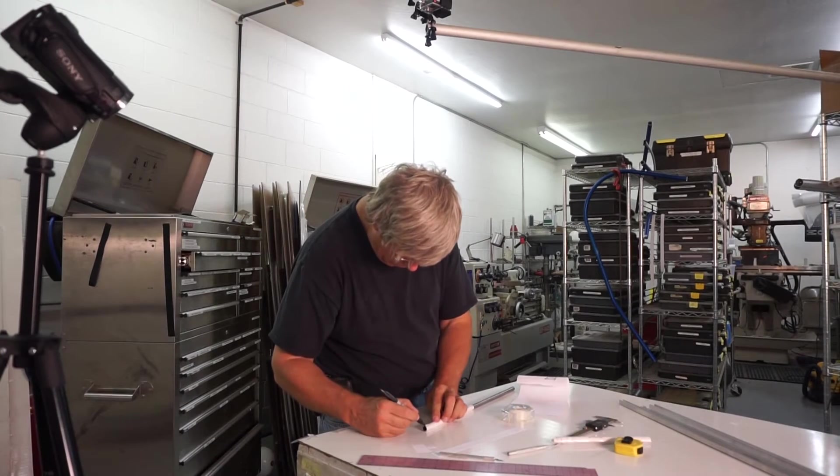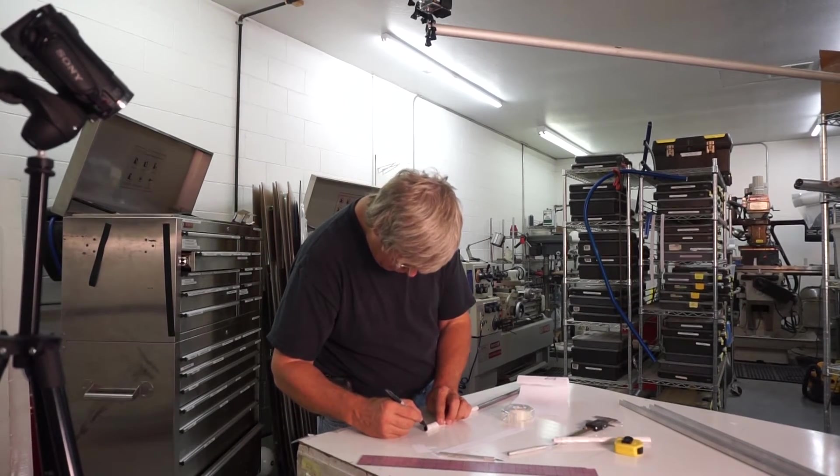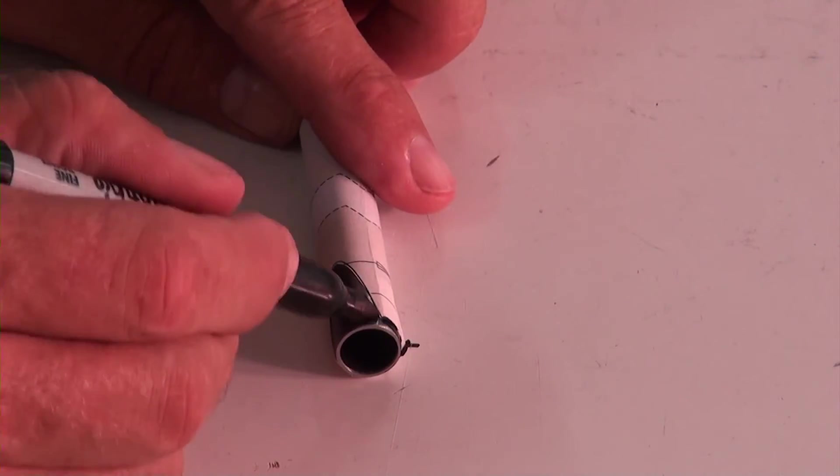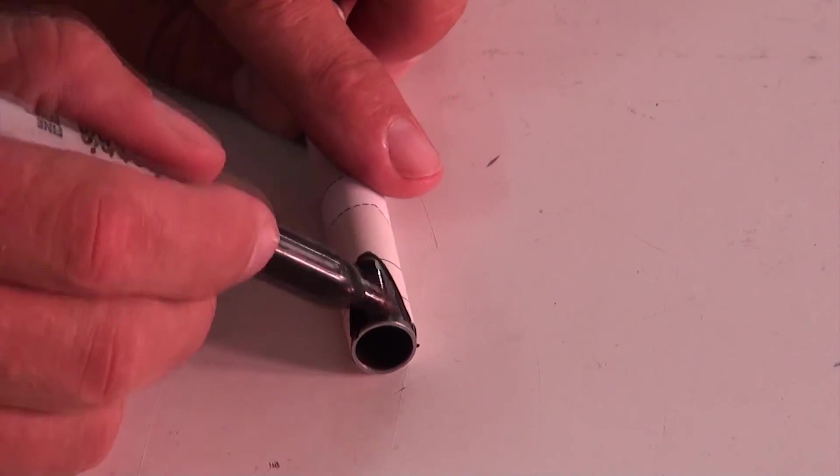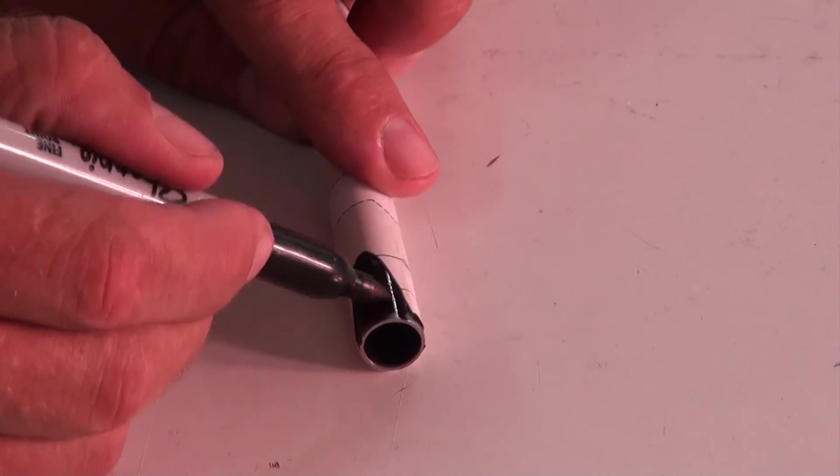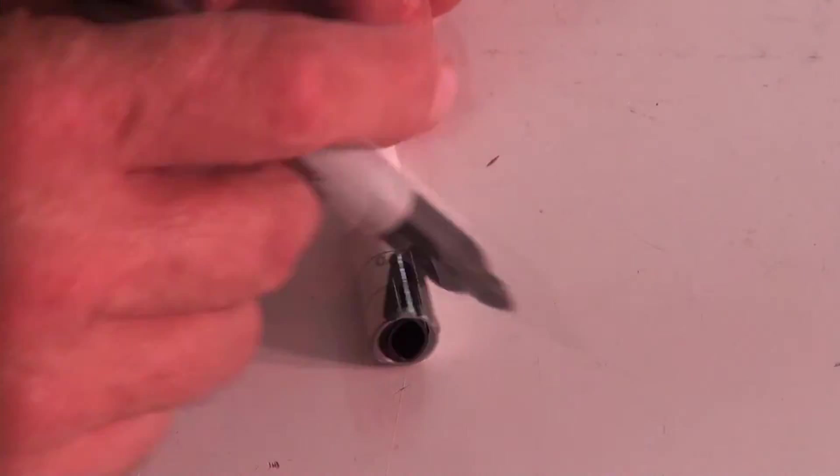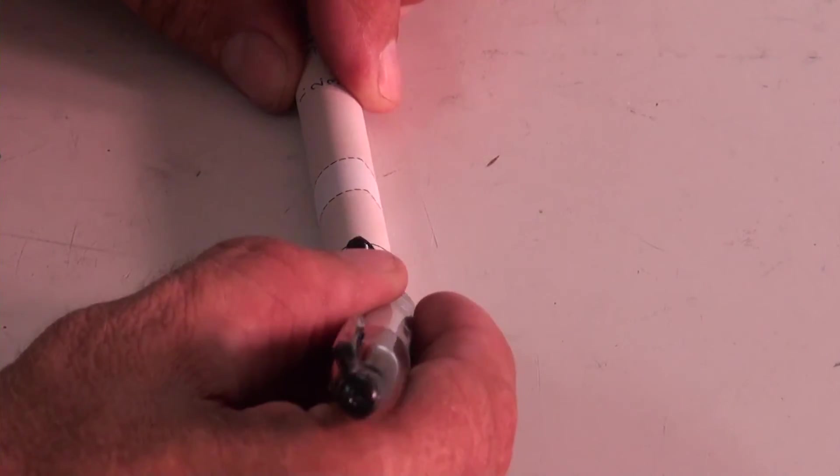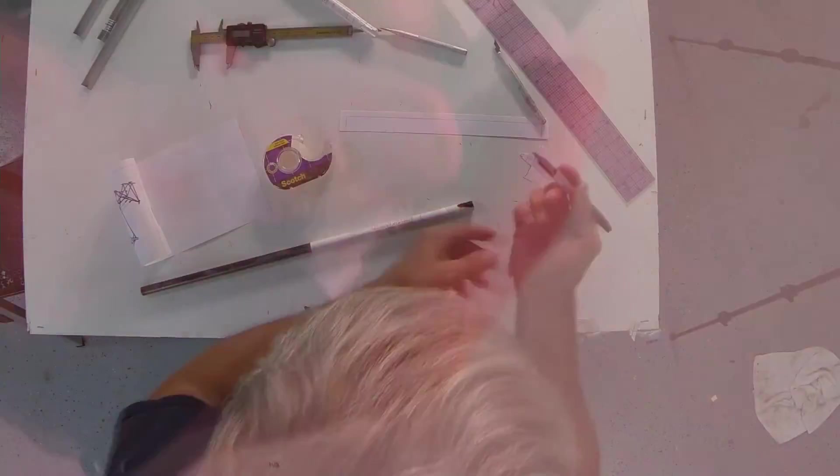And then the next step is to simply take our magic marker and mark all of the locations where the tube is going to be cut out. And we'll color it in so it holds its color while we're working with it. Once we've got that colored in, we'll make sure that we've got each one of the sections covered.